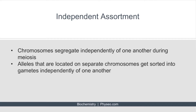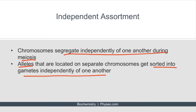Independent assortment refers to the idea that chromosomes segregate independently of one another during meiosis. Because chromosomes segregate independently, it can be deduced that alleles located on separate chromosomes also segregate independently. In other words, the alleles are sorted into gametes independently of one another.